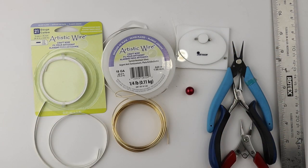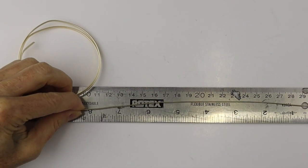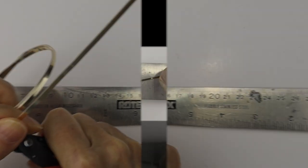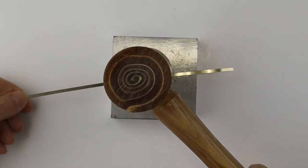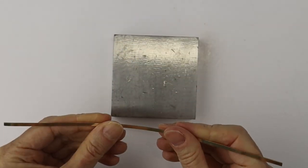I have a bracelet mandrel, beads, and my tools. We're going to measure about 8 inches of the 3 millimeter flat artistic wire. I'm going to harden it up a little bit with a rawhide mallet because the 3 millimeter is a bit softer.